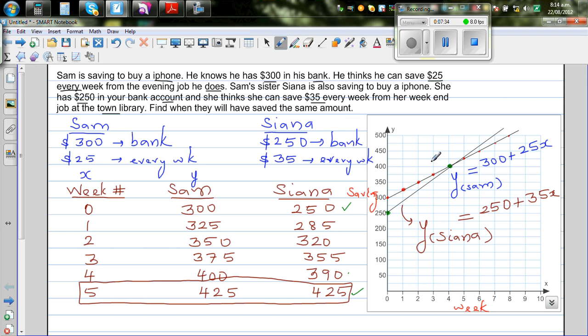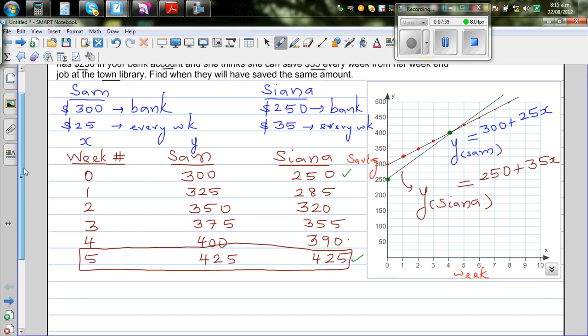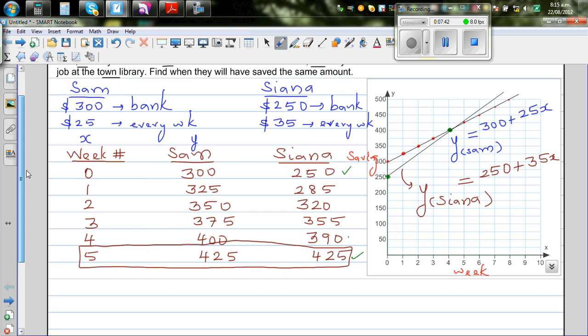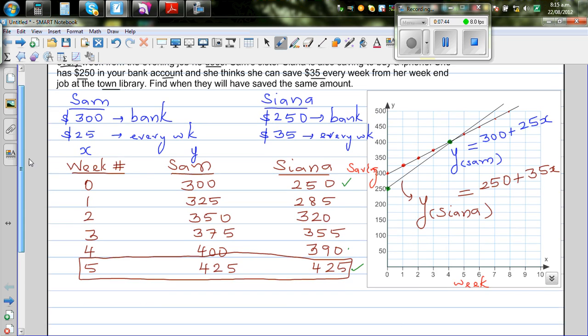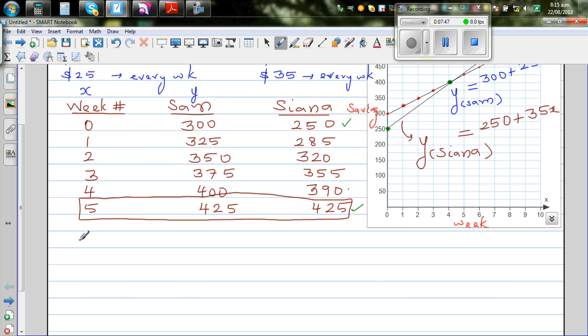Now, without doing the table and the graph, can we do it in an algebraic way? We know Y Sam, that is saving for Sam, can be written as 300 plus 25x. And Y, which is saving for Sienna, is 250 plus 35x.